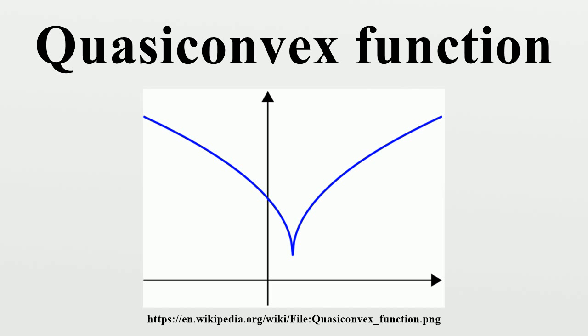The negative of a quasi-convex function is said to be quasi-concave. All convex functions are also quasi-convex, but not all quasi-convex functions are convex, so quasi-convexity is a generalization of convexity.